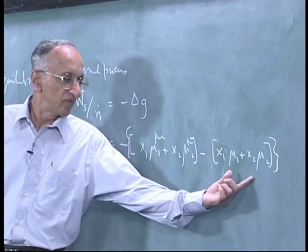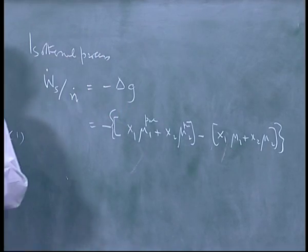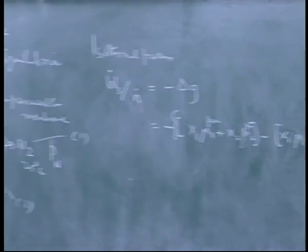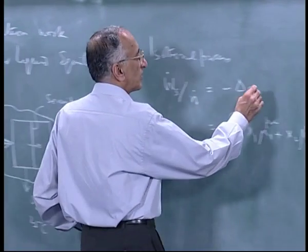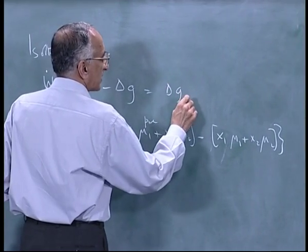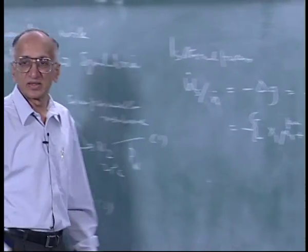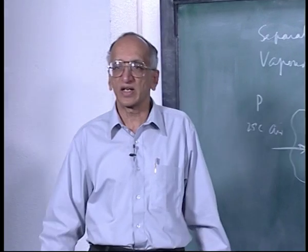These are the products. This is pure minus x1 mu1 plus x2 mu2. This is G before. In this case, it is minus delta G. This is not delta G of mixing. This is delta G for the process. So this is equal to delta G mixing because this is delta G separation which is minus of delta G mixing.